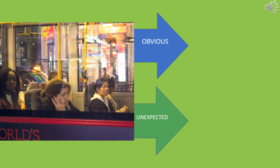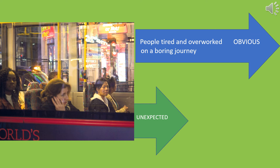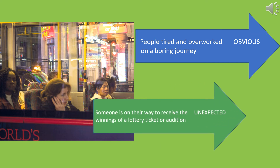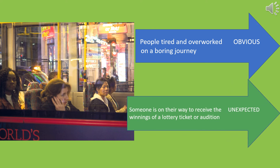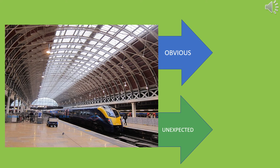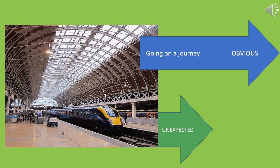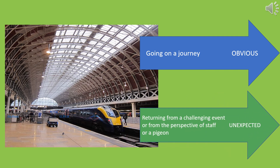What would be the obvious things to write about this picture? What would be unexpected? The obvious would be that people are tired and overworked and on a boring journey. The unexpected would be that someone is on their way to receive the winnings of a lottery ticket or perhaps attend an audition. For the next picture, the obvious would be that someone is going on a train journey, but the unexpected might be that they're returning from a challenging event, or told from the perspective of staff or a pigeon.